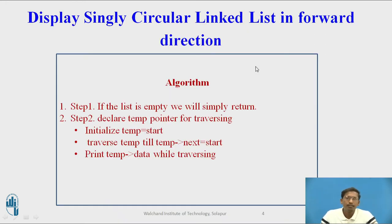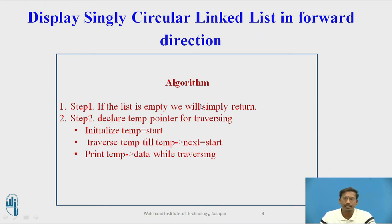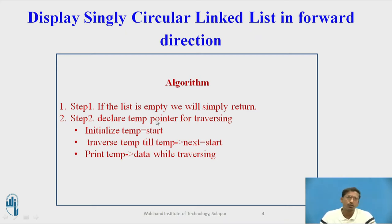Now we will see an algorithm for displaying a singly circular linked list in forward direction. Step 1: if the linked list is empty, we will simply return. You cannot display the nodes when the singly circular linked list is empty — in that case, we are directly returning from the function. Otherwise, declare one temporary pointer called temp for traversing from the first node to the last node. Initialize temp to start, so temp will point to the first node.